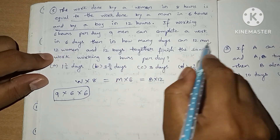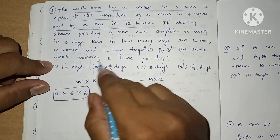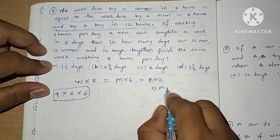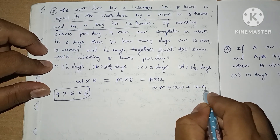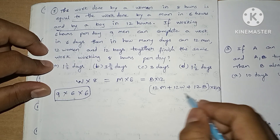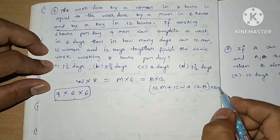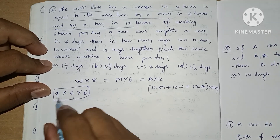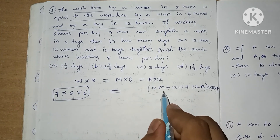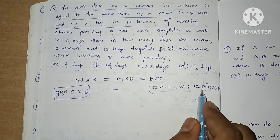Then, in how many days can 12 men and 12 women together with 12 boys finish the same work, working 8 hours per day? So we are talking about 12 men plus 12 women plus 12 boys together working 8 hours. In how many days? We need to find the D value. Total work is 10. We need to convert all men, women, and boys into a single variable — men.